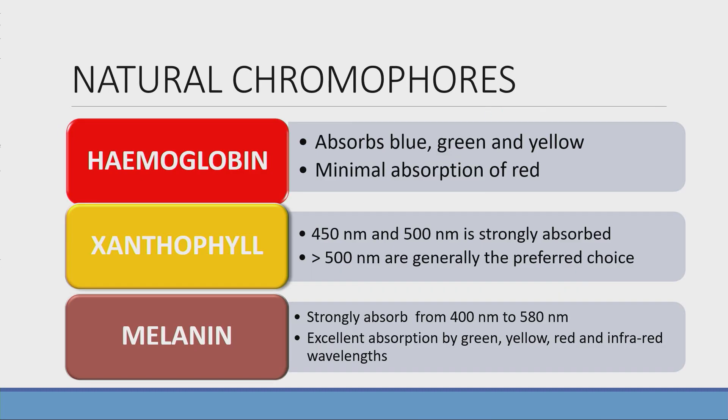The natural chromophores are hemoglobin, which absorbs blue, green, yellow, with minimal absorption of red. So in case of vitreous hemorrhage, we use infrared light, which gets less scattered.